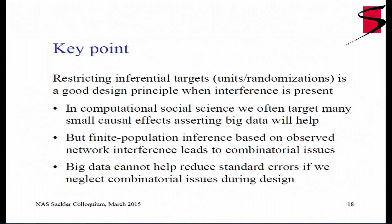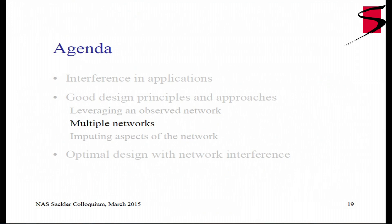The key point so far is that restricting inferential targets in different ways is a good design principle when interference is present. In computational social science, we often target many small causal effects, and the typical assertion is that big data will help — we have so much data, we'll estimate everything precisely. But finite population inference based on observed network interference leads to combinatorial issues. Big data cannot really help reduce standard errors if we neglect these combinatorial issues during the design phase.